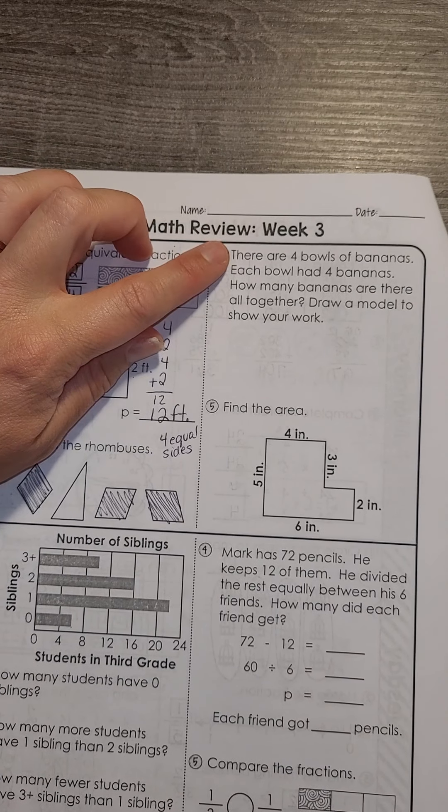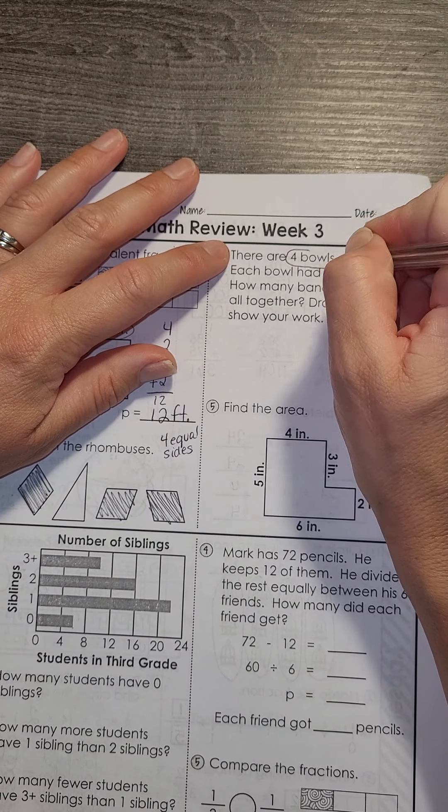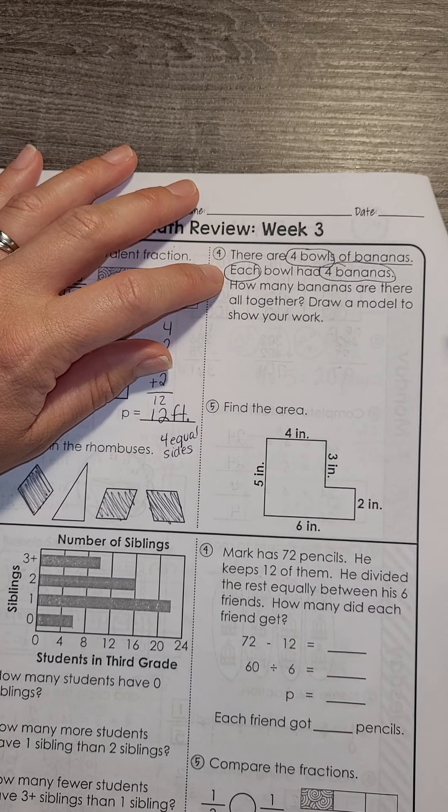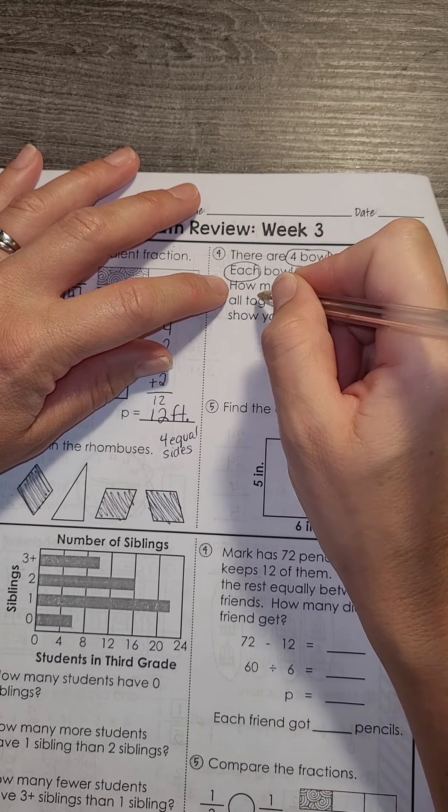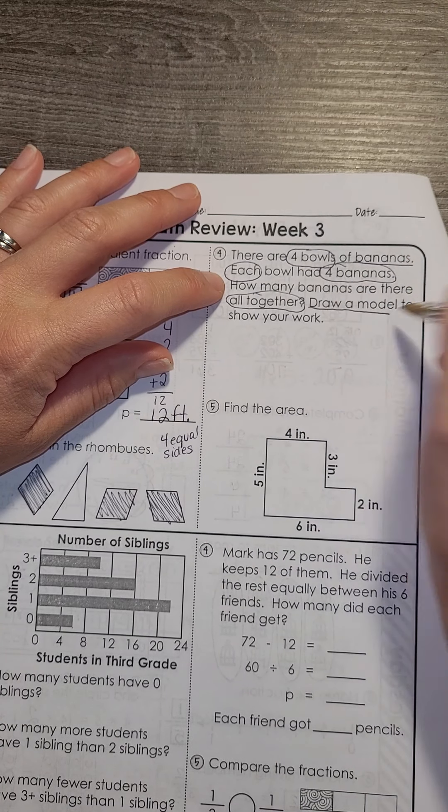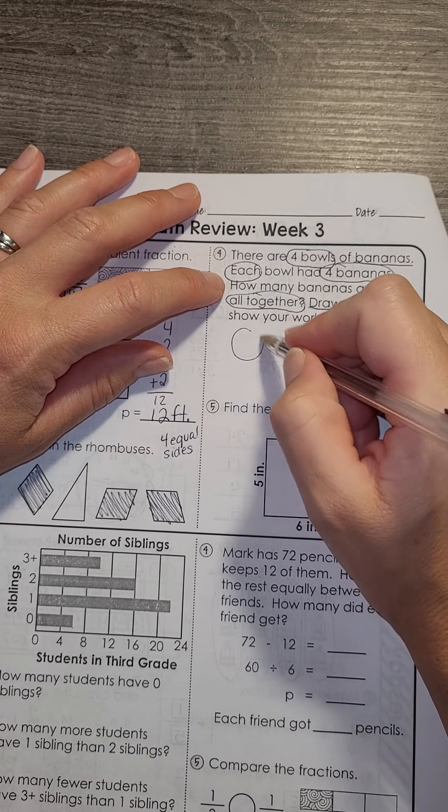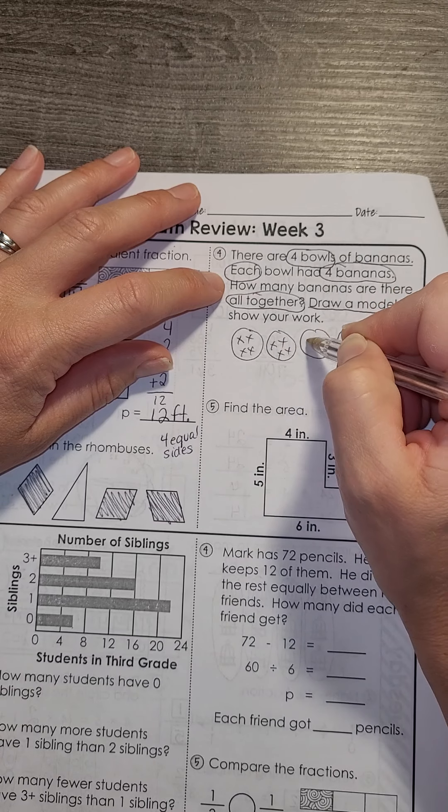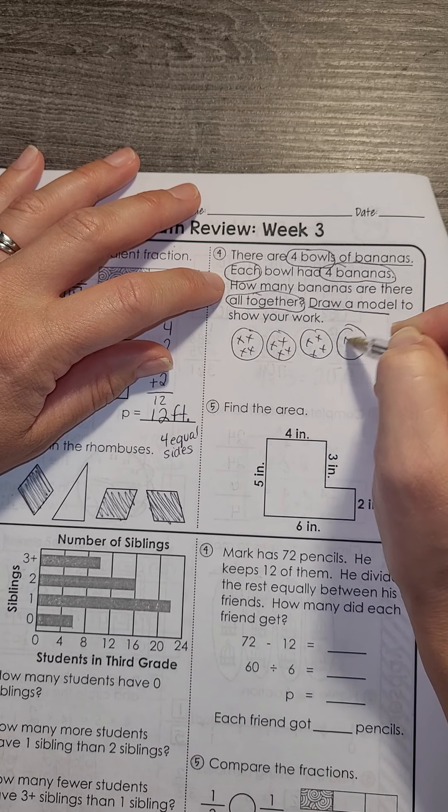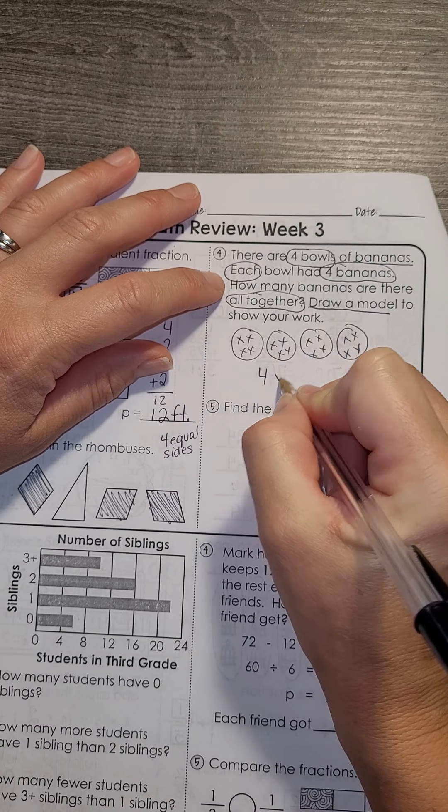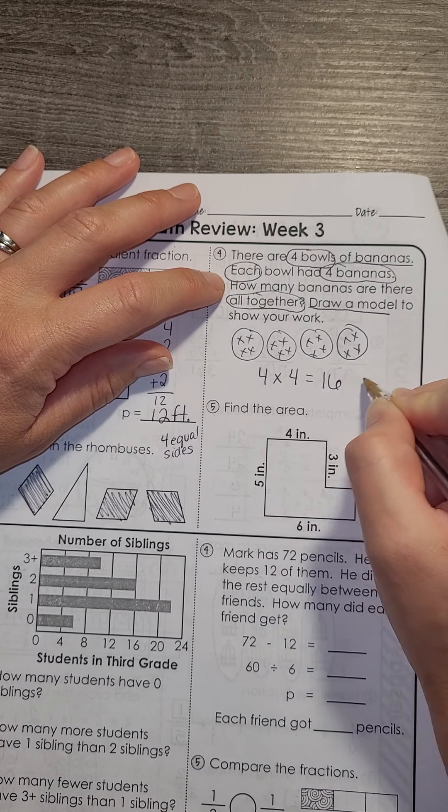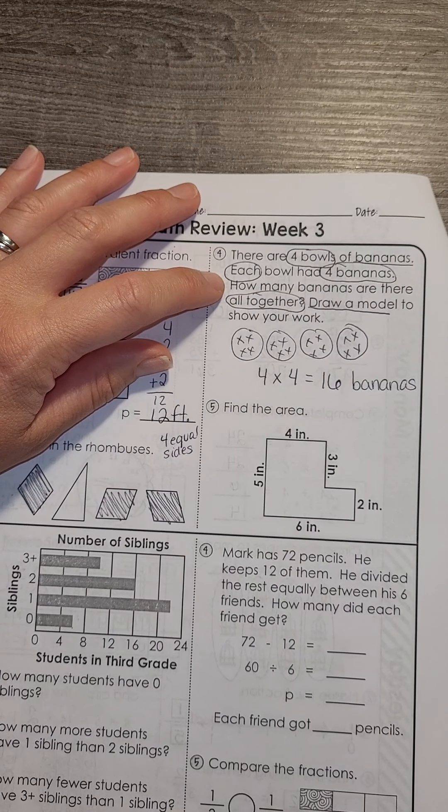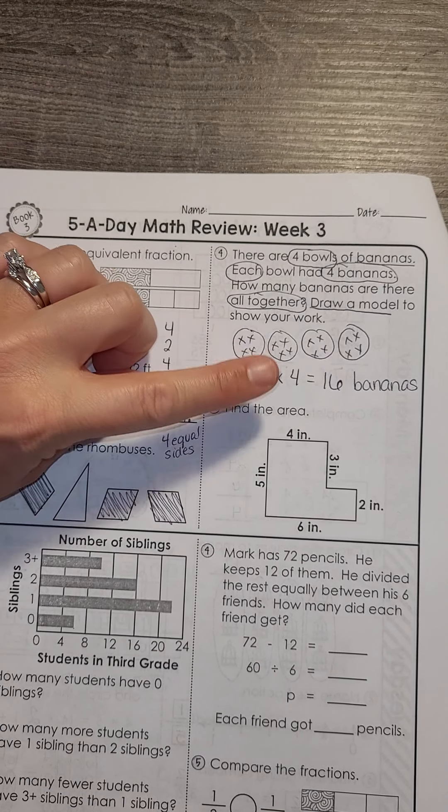Number 4. There are 4 bowls of bananas. Each bowl has 4 bananas. How many bananas are there all together? Draw a model. So I should have made 4 bowls. Put 4 bananas in each bowl. And my equation would be 4 bowls times 4 in each would give us 16 bananas. I was looking for the model and the answer.